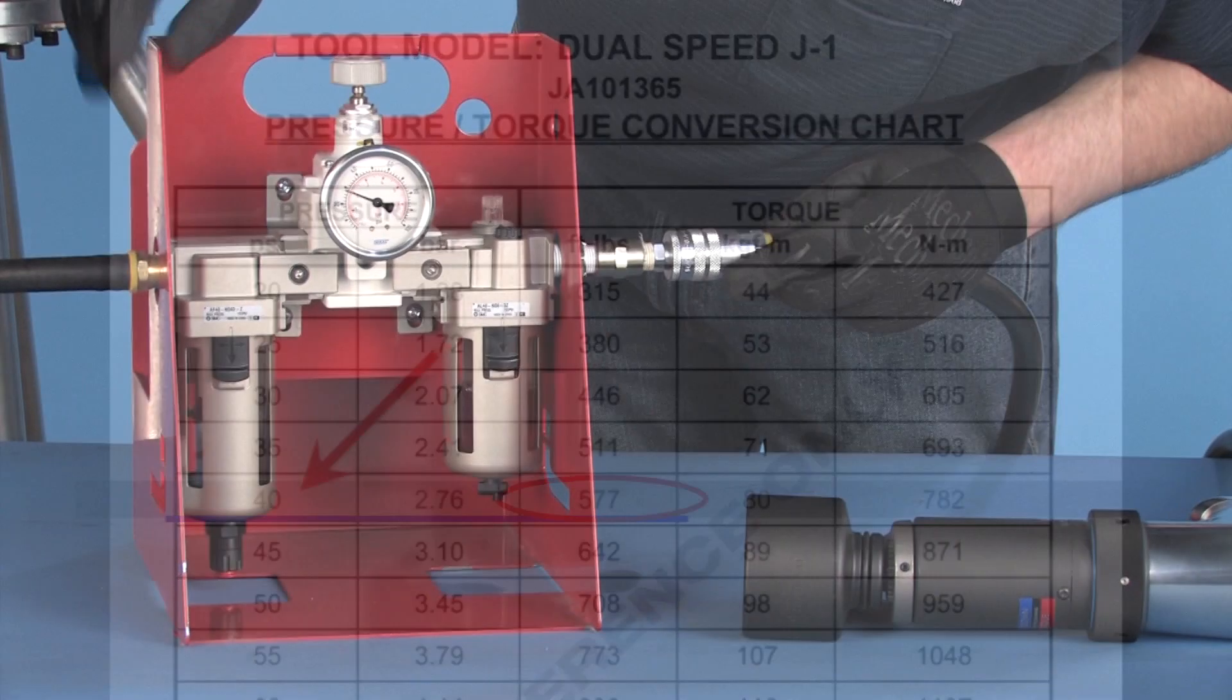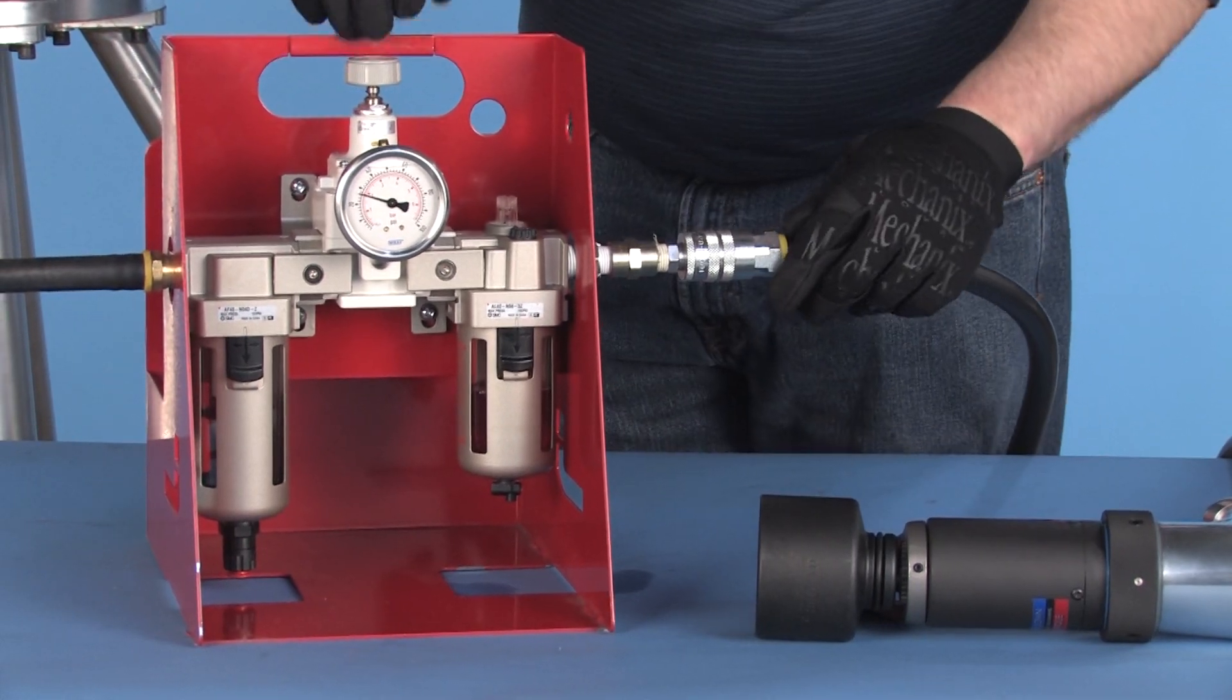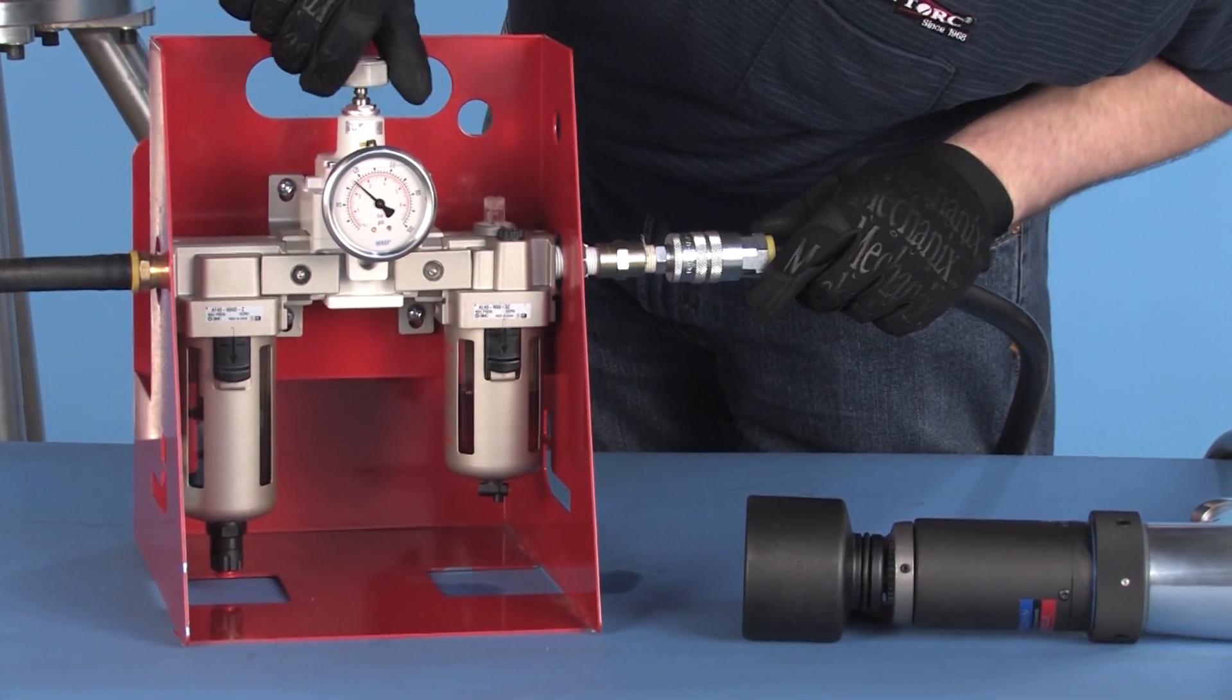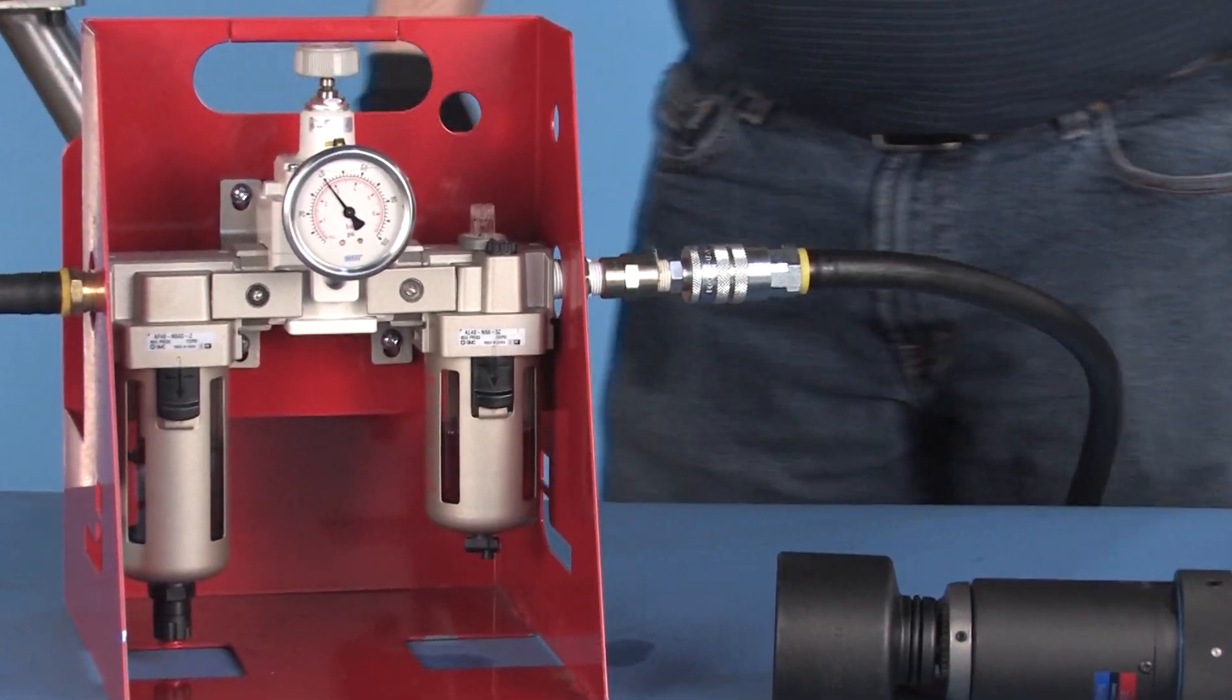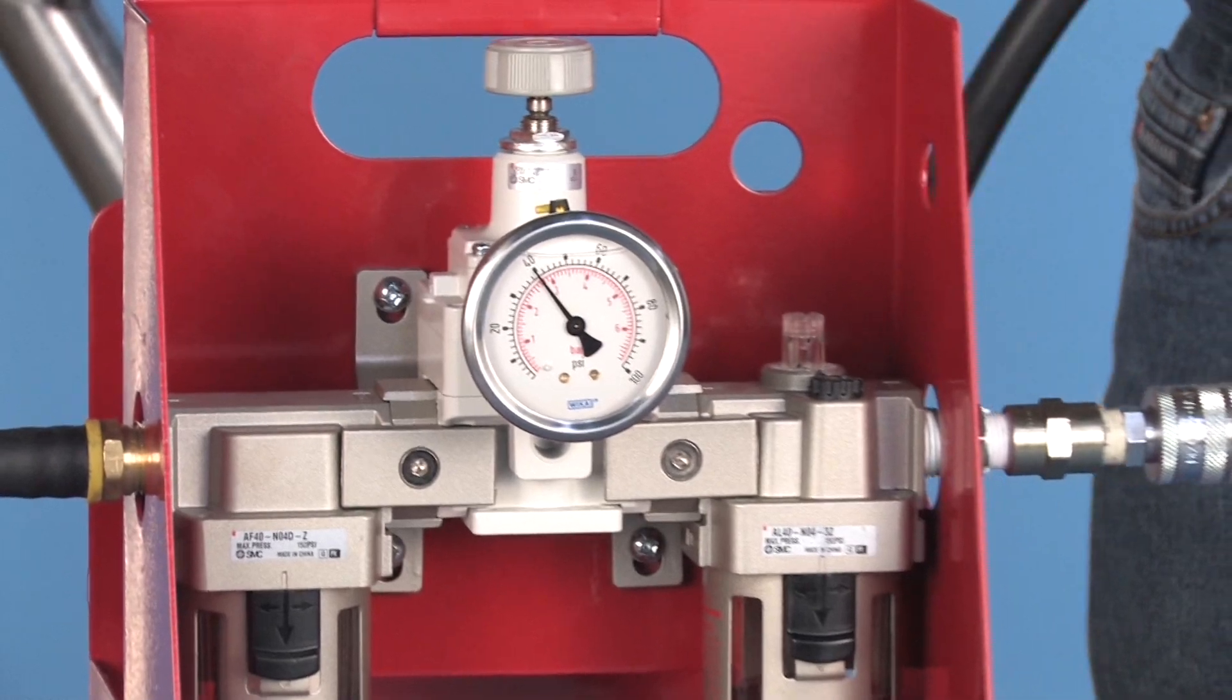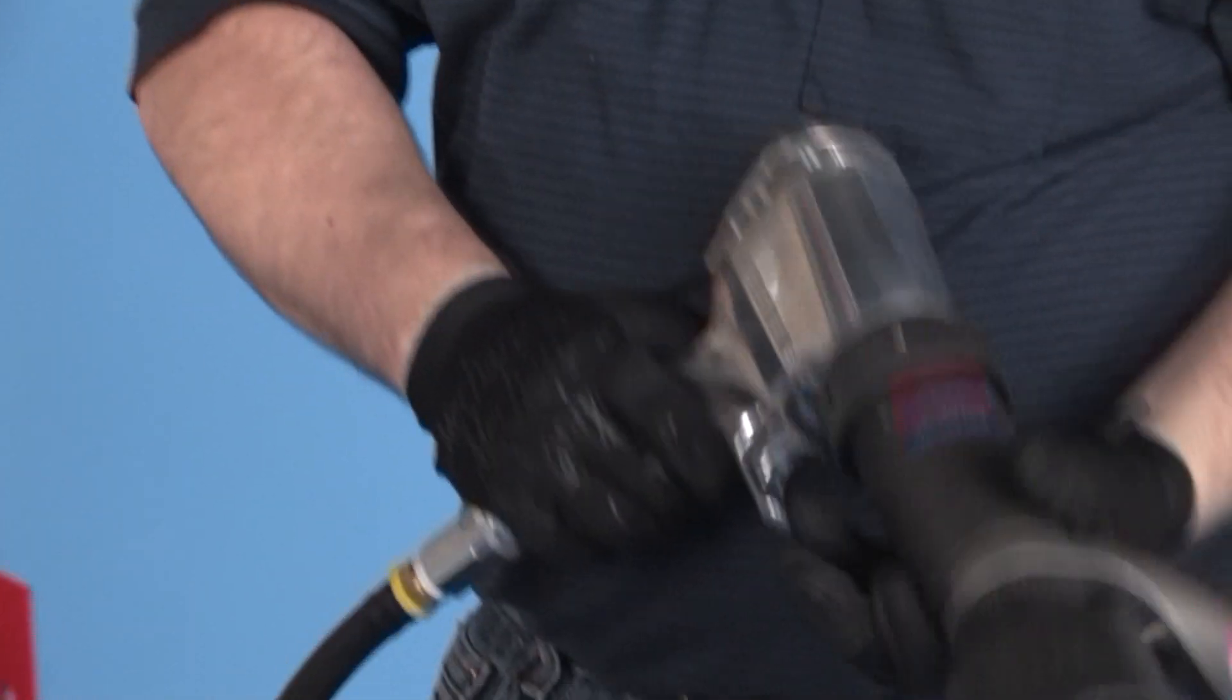With the tool on a stable surface, turn on the air supply, and adjust the incoming air pressure up to 40 PSI by turning the regulator knob. Always adjust pressure from lower to higher.